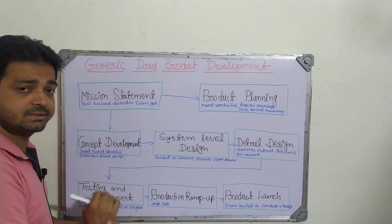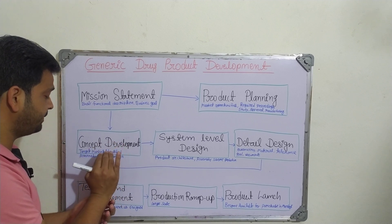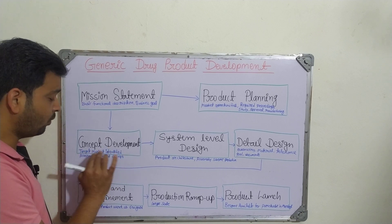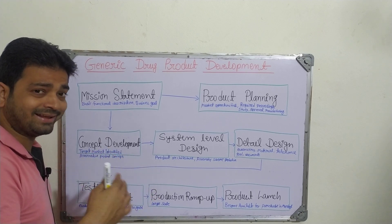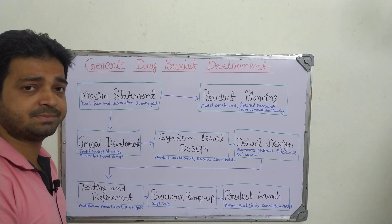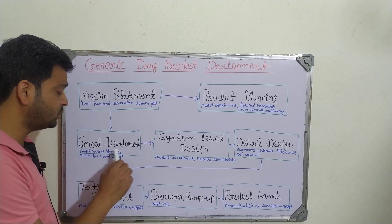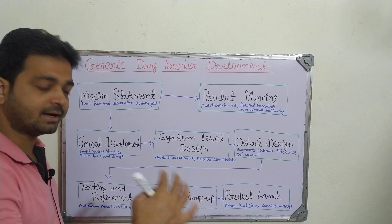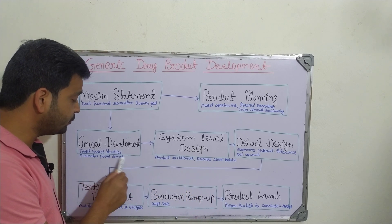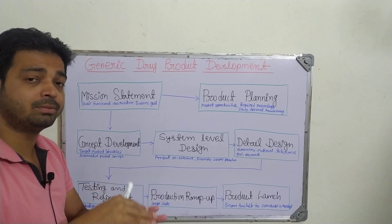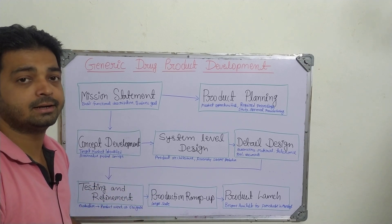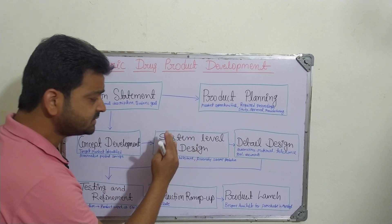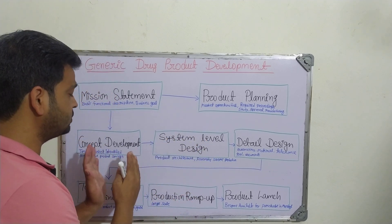Next is concept development. In that we are going to identify the target market — like anti-cancer, what is the number of cancer patients or HIV patients — we need to identify the target market and which product is required for that reason. We also look at alternative product concepts: why do we need to go for an alternative even though a branded drug already exists in the market? That is the theme.